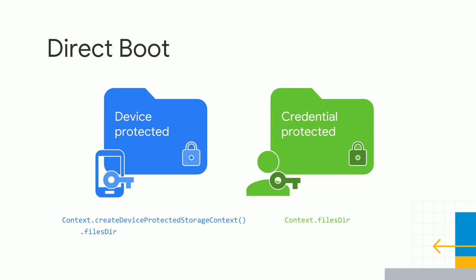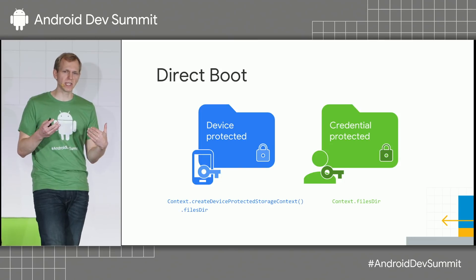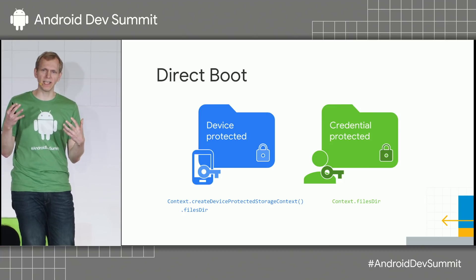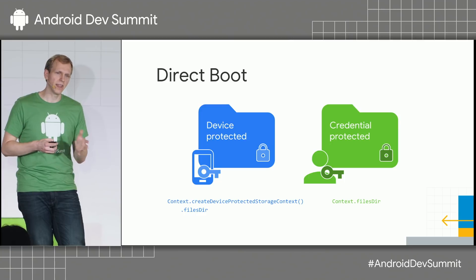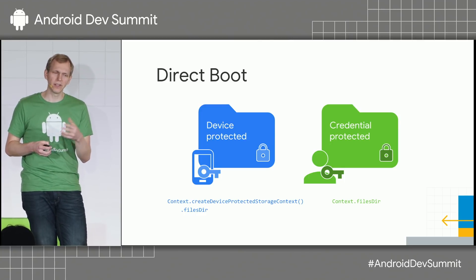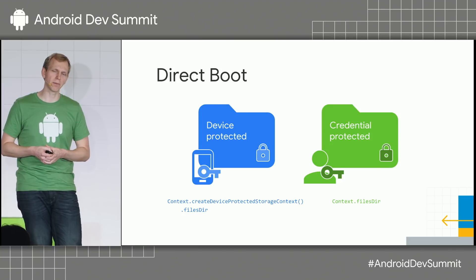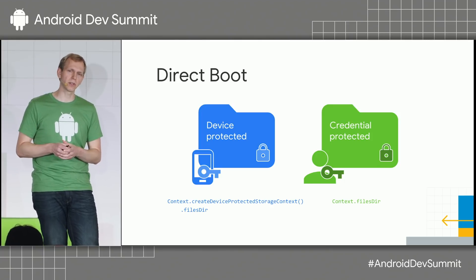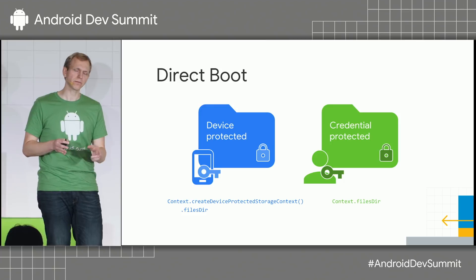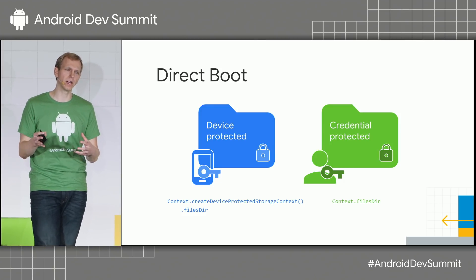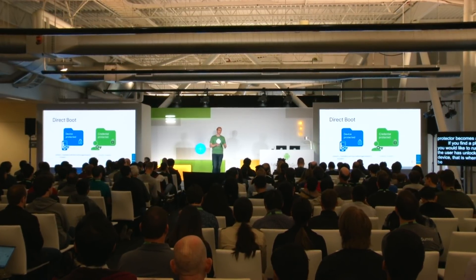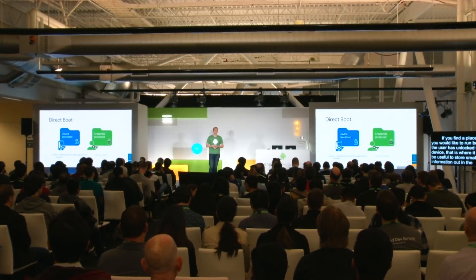The device protected area becomes available by virtue of the device proving it hasn't been tampered with. When the device boots up, DM Verity verifies this, which unlocks the device protected storage. Then later, when the user enters their PIN, pattern, or password, the credential protected storage becomes available. All of your data by default as an app developer is always stored in the credential protected area.